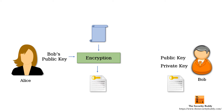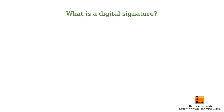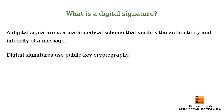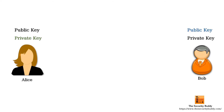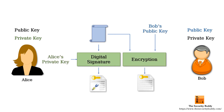To address this problem, a digital signature is used. A digital signature is a mathematical scheme that verifies the authenticity and integrity of a message. Digital signatures use public key cryptography. So if Alice sends a secret encrypted message to Bob and Bob wants to ensure that no one else other than Alice sent the message and that the message is unmodified, then Alice needs to digitally sign the message using her private key.